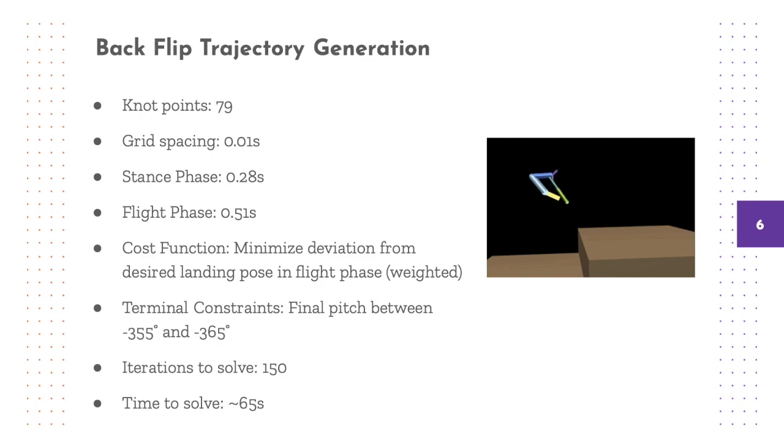The backflip is the motion we are most interested in demonstrating on the humanoid, so here we briefly review how we generate this trajectory. The trajectory takes place over 0.79 seconds with 79 knot points. The stance phase accounts for roughly the first 35% of the trajectory, with the flight phase accounting for the rest.